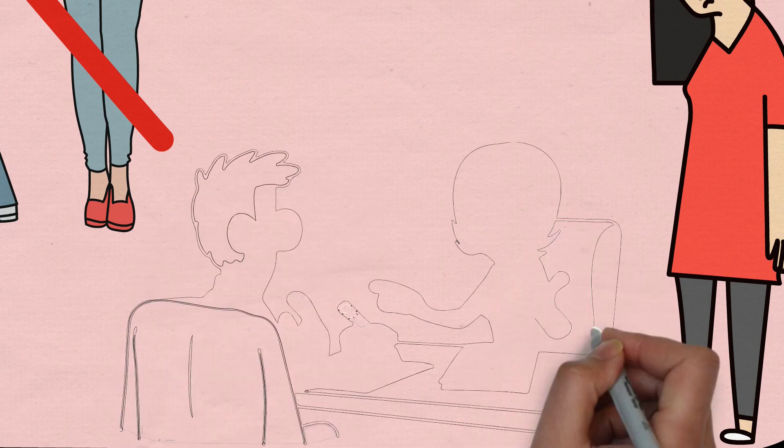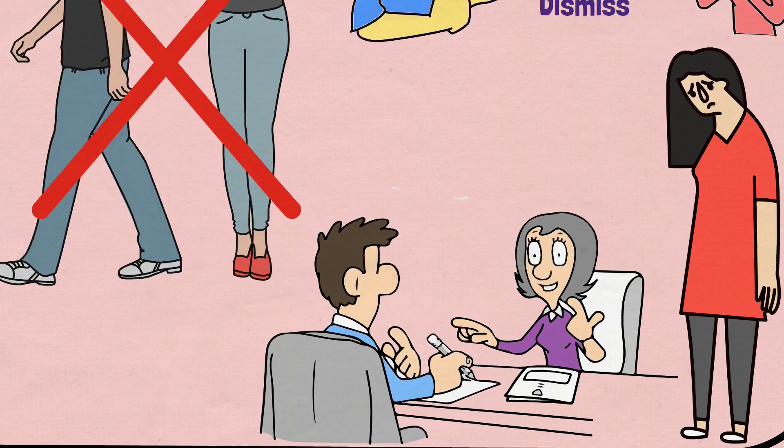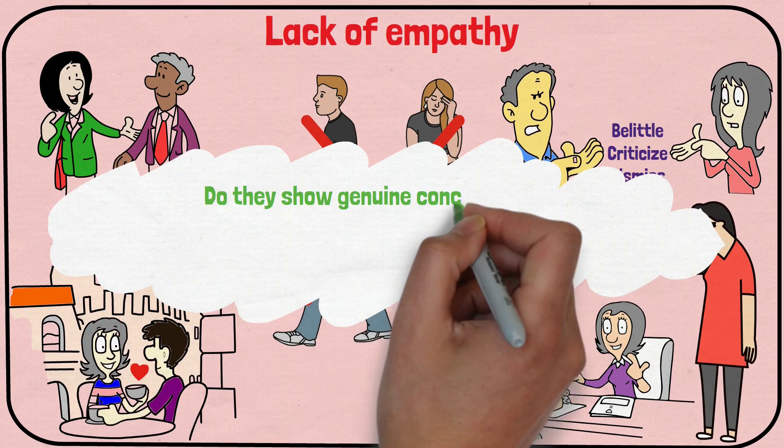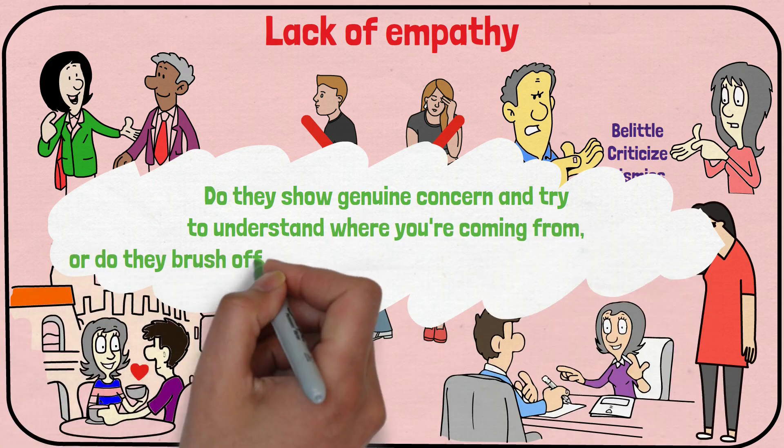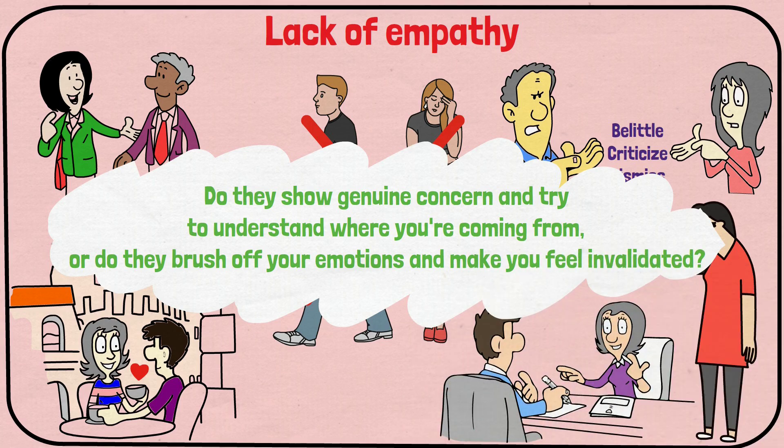One way to spot a lack of empathy in an emotionally abusive relationship is to pay attention to how your partner responds to your feelings. Do they show genuine concern and try to understand where you're coming from? Or, do they brush off your emotions and make you feel invalidated?